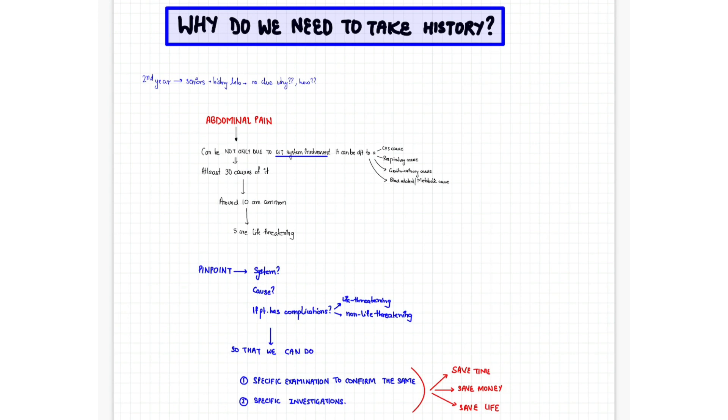It may be due to a blood-related cause or a metabolic cause. There might be at least 30 causes for abdominal pain, out of which around 10 are common depending on the age group, and around five of which are life-threatening.